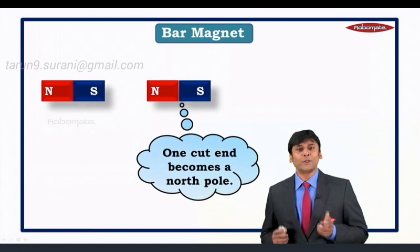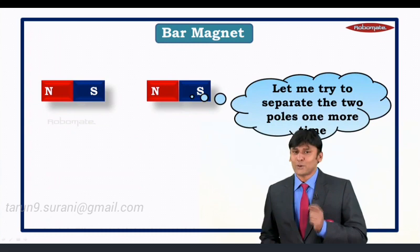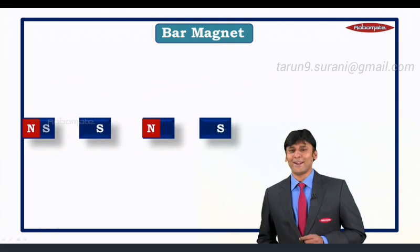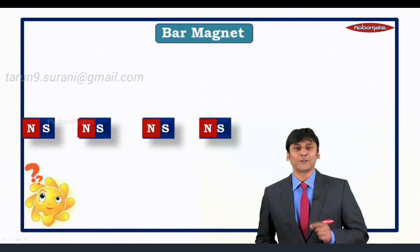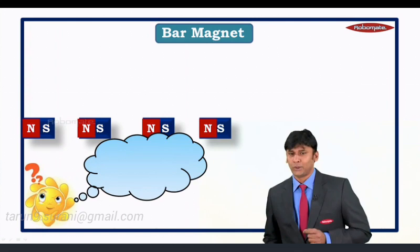When we try to separate the two poles one more time, once again each piece develops the required opposite pole. This means a magnet cannot be a monopole — it is always a dipole.